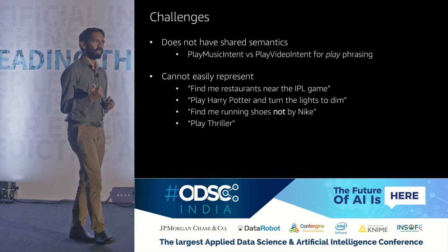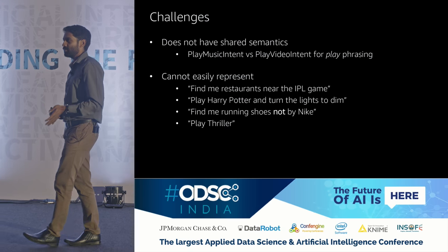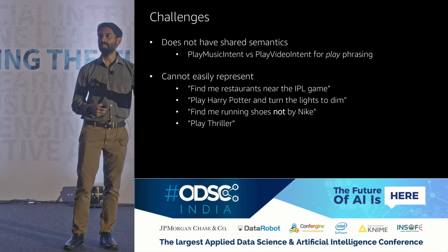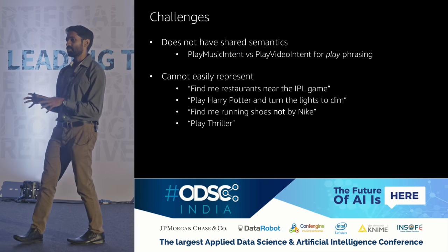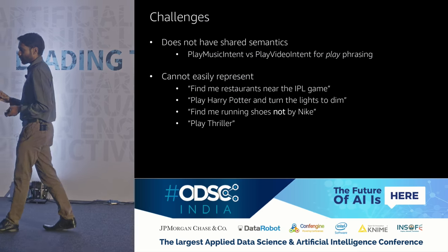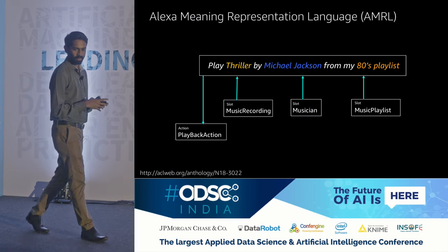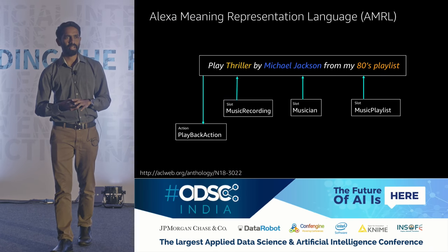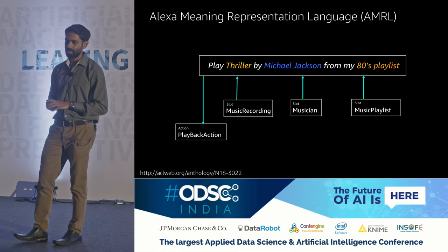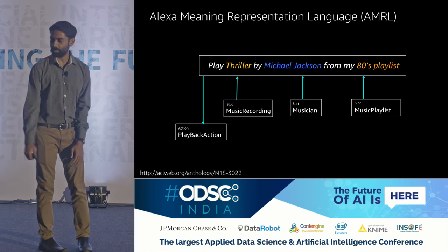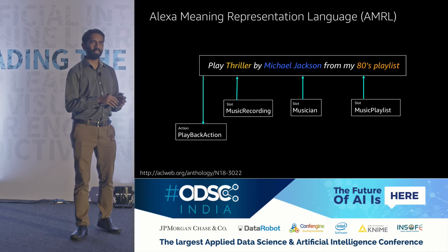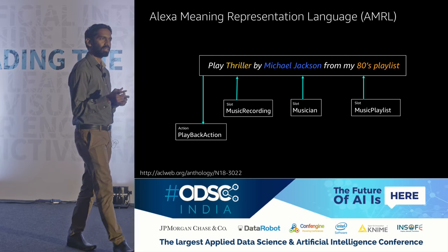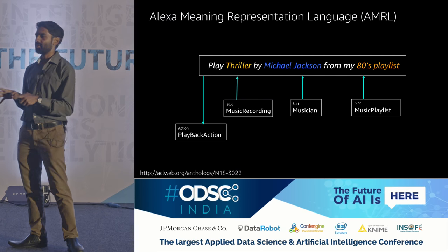To address these challenges, we came up with something called the Alexa Meaning Representation Language (AMRL), just presented at NAACL 2018 — there's a link to the paper. The big difference is it doesn't represent things in terms of flat intents. Instead it's about actions and creating a factored graph between all these things. When someone says 'play Thriller by Michael Jackson from my 80s playlist,' the first step is still to pull out the slot values — music recording, musician, and music playlist.